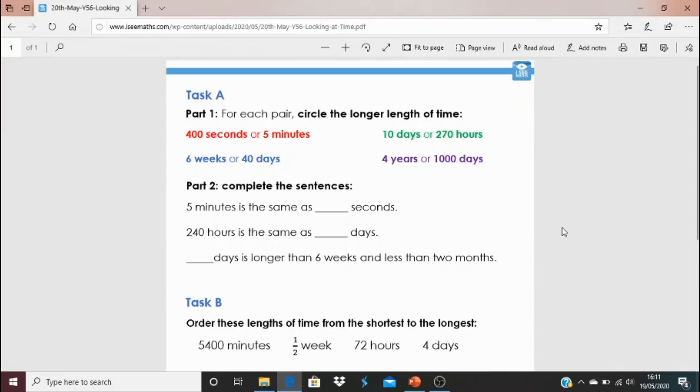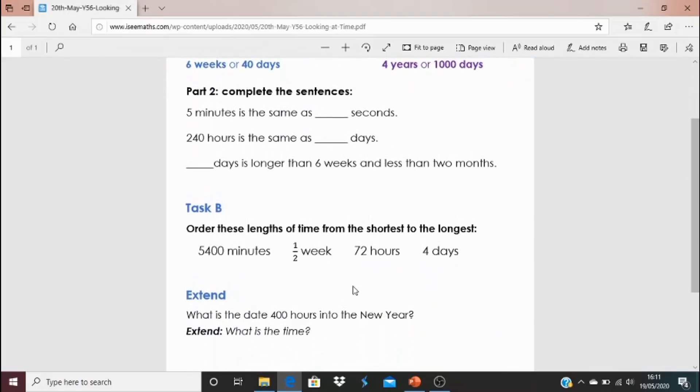So today's task, click that blue link underneath the video. Task A, for each pair of each different colour, circle the longer length of time. For example, is it 400 seconds or five minutes? And do those other examples as well. For part two, five minutes is the same as how many seconds and the other examples as well. Task B is very different. Have a look at these lengths of time and order them from the shortest to the longest. Which unit are you going to convert these into? It could be that you've had a go at task A and you could have a go at task B, but you would need a calculator. That might be an appropriate choice for you.